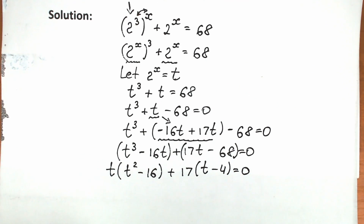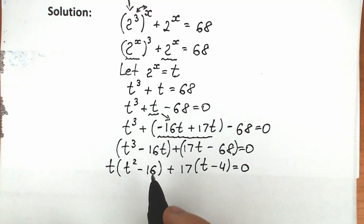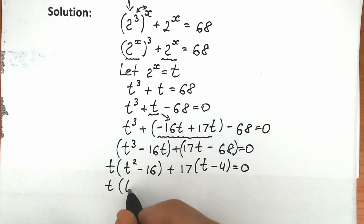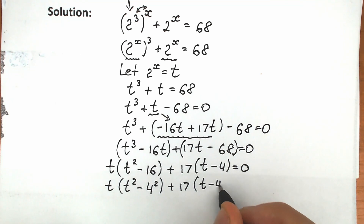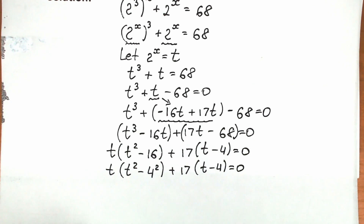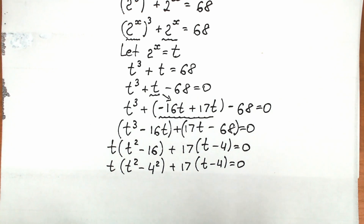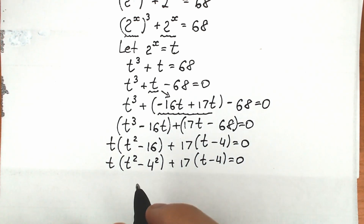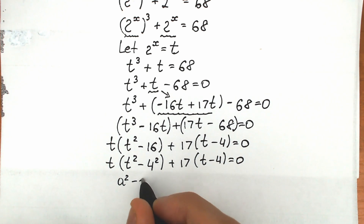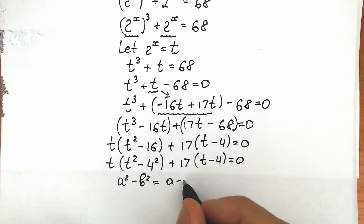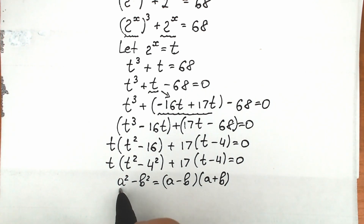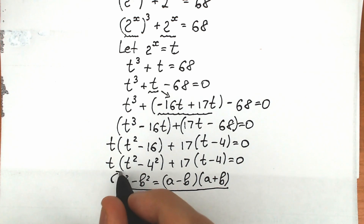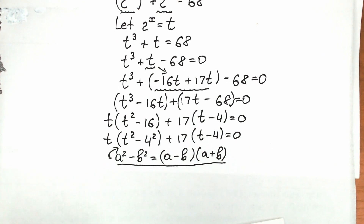We can write t squared minus 16 as t squared minus 4 squared, and this helps us a lot because it's the classic difference of squares formula. Everyone should know this formula: a squared minus b squared equals (a minus b)(a plus b). Let's apply this formula here.